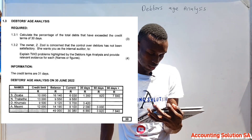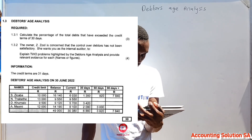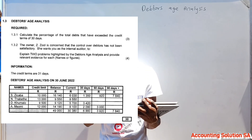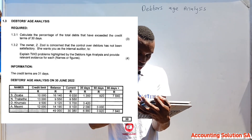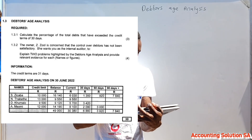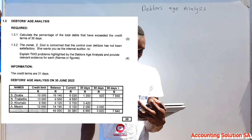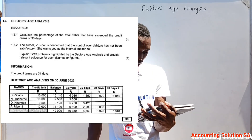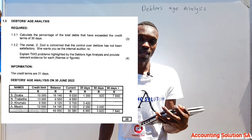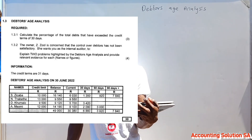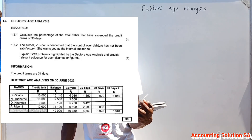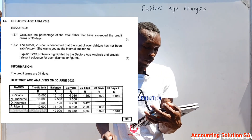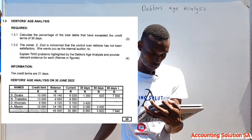We are given that the credit term is 31 days — meaning the maximum days for collection as a company must be within 31 days, after one month. Then we are given a debtor age analysis as of 30 June 2022. We have the names of debtors, a column for credit limit, and the current balance. For example, Zikaba's credit limit is 10,000 but the balance is 16,000, meaning this person exceeded the credit limit. Targeted's credit limit is 13,000 but the balance is 9,500, meaning this client did not exceed the credit limit.